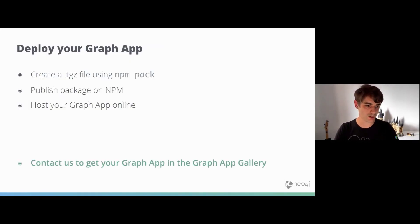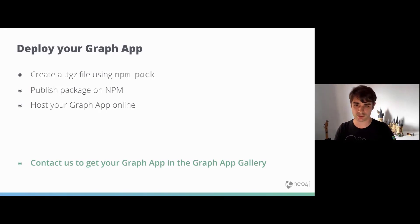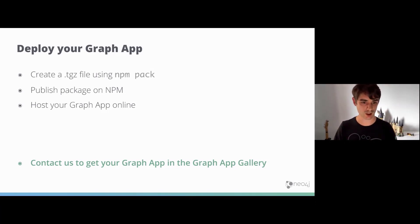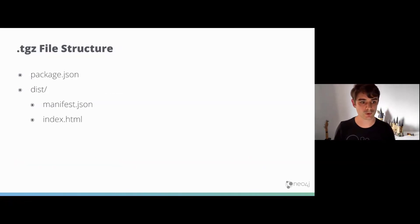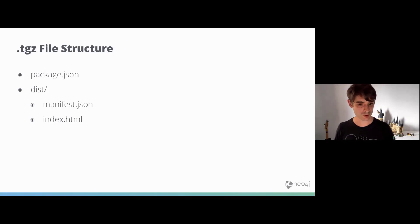Once you've built the app, there are a few deployment options. You can create a tar file using npm pack, which packages the app into the correct format. Or you can host your graph app online and send the URL to other users to install. The archive structure should have a package.json at the root and a dist folder containing the index.html entry point, plus any images, scripts, or other assets the graph app requires.